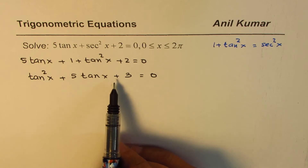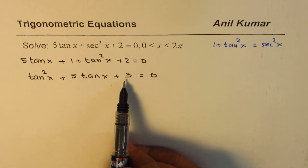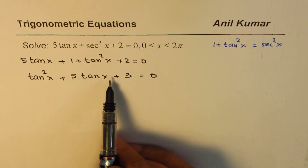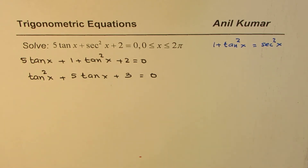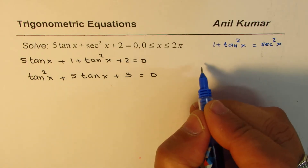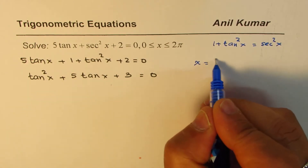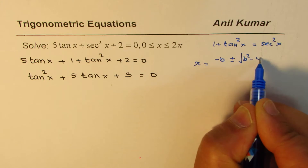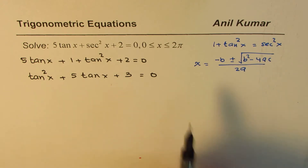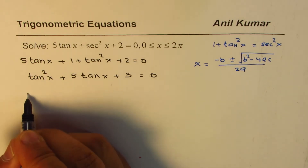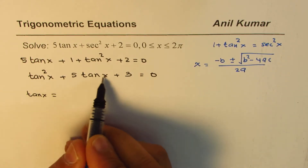tan²(x) + 5tan(x) + 3 cannot be factored easily, because we need two numbers with product 3 and sum 5 — that's not possible. So we use the quadratic formula: tan(x) = (−b ± √(b² − 4ac)) / 2a, where the variable is tan(x), not just x.